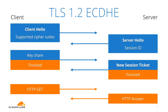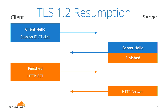In a normal TLS 1.2 two-round-trip connection, the server sends a new session ticket at the end — an encrypted blob of key material the client holds onto, encrypted and signed with a key only the server knows, so it's completely opaque to the client. The next time the client connects to the same website, it sends a client hello and the session ticket. If the server recognizes the ticket, it decrypts it, finds the key material, and after only one round trip has shared key material with the client.